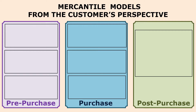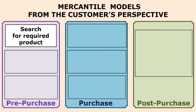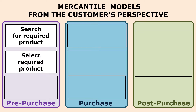Let us look at these three phases one by one. First, the pre-purchase phase. The very first point is searching for the required product online. Online sellers provide a text-based search facility and a voice-based search facility, with which people can look for the required product.